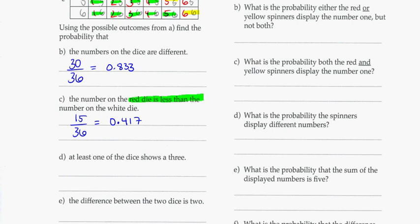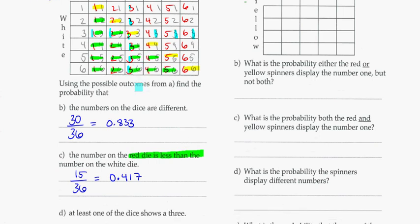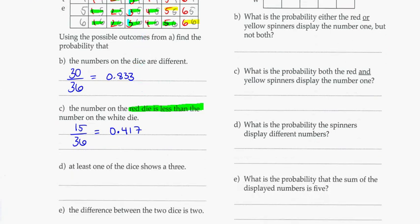Next question. Let's find the probability that at least one of the dice shows a 3. So what are all the possible ways that we can see a 3 on these dice? And at least one means it could be both. I've got 1, 2, 3, 4, 5, 6 ways there for a 3 on the red. And I have 1, 2, well that one's already been counted, so I won't count it. 3, 4, 5 other ways that I can get a 3 on the white die. So that's 1, 2, 3, 4, 5, 6, 7, 8, 9, 10, 11. So that should be 11 out of the 36.